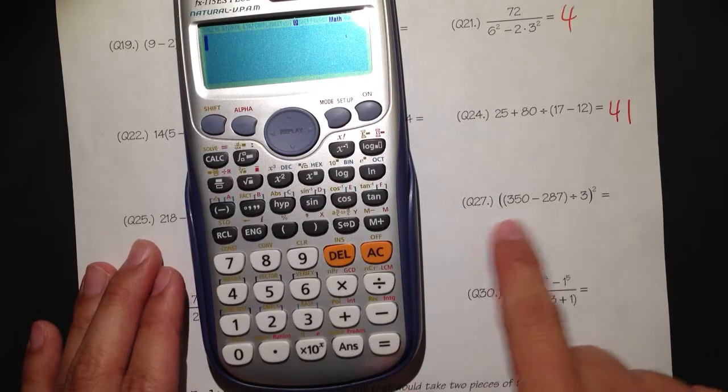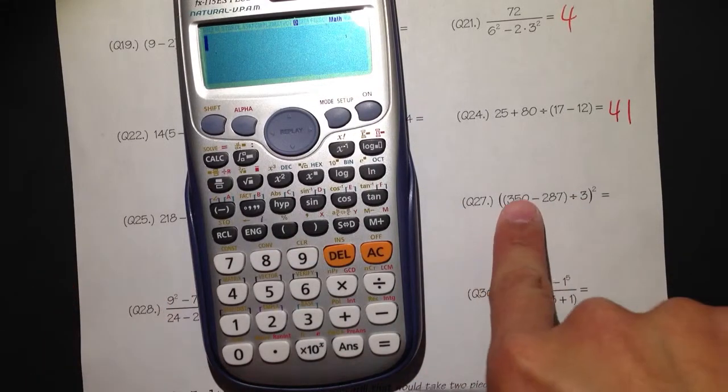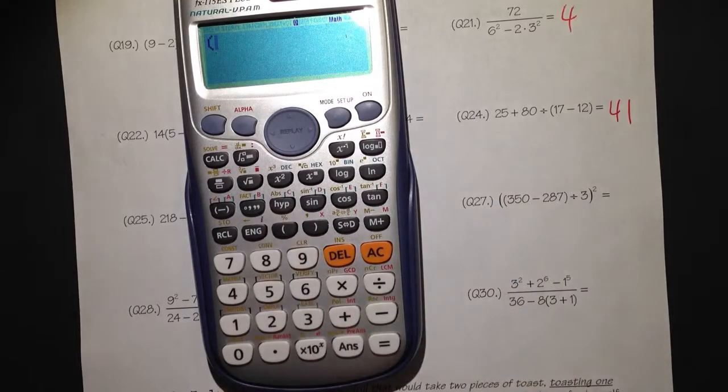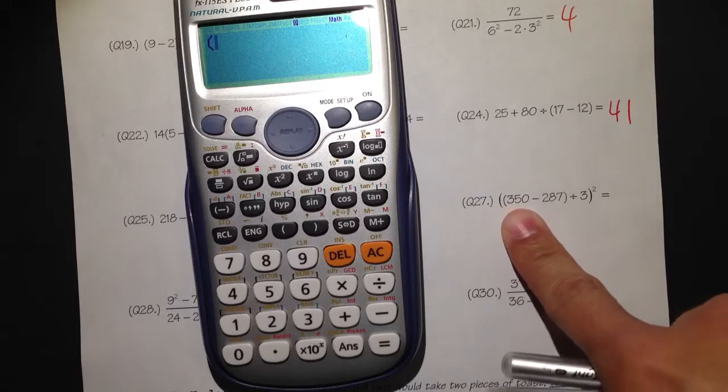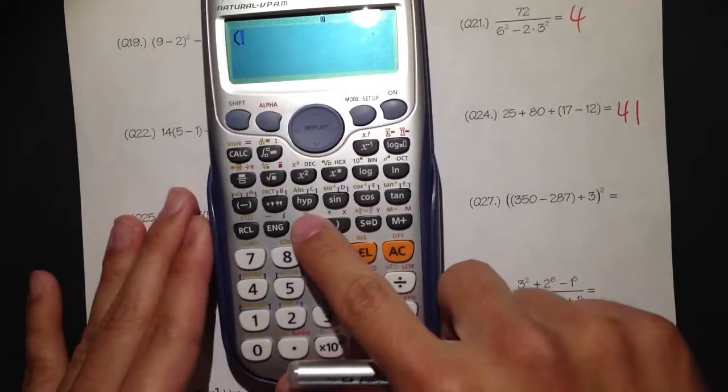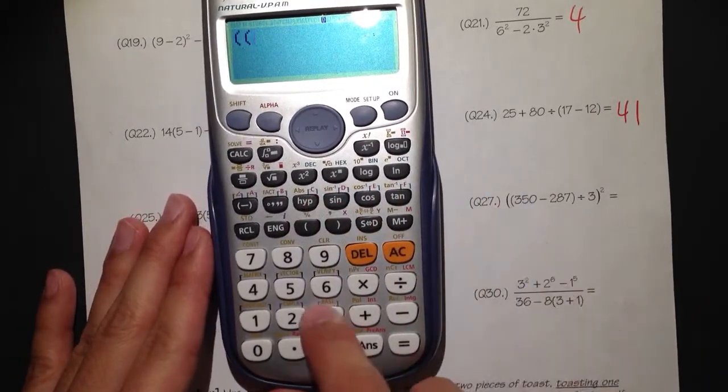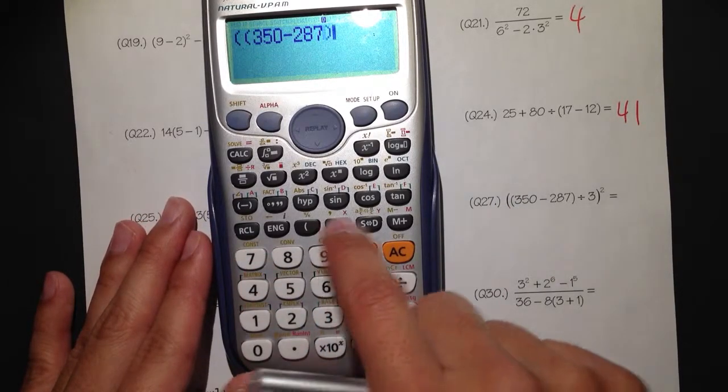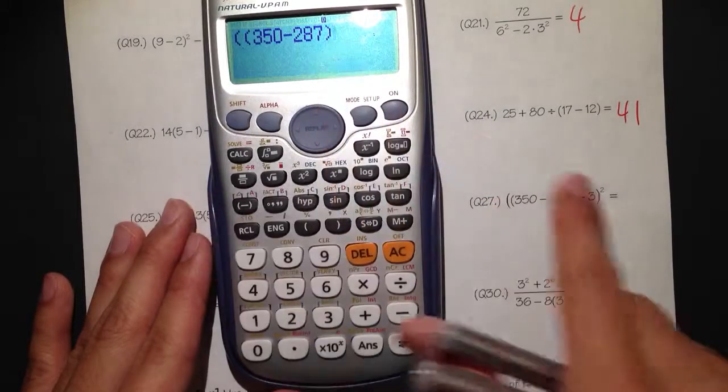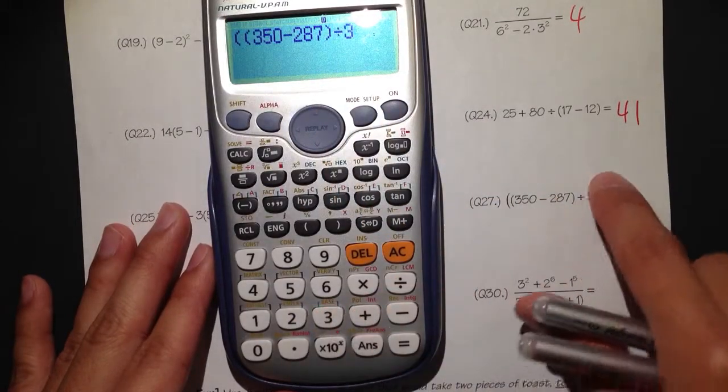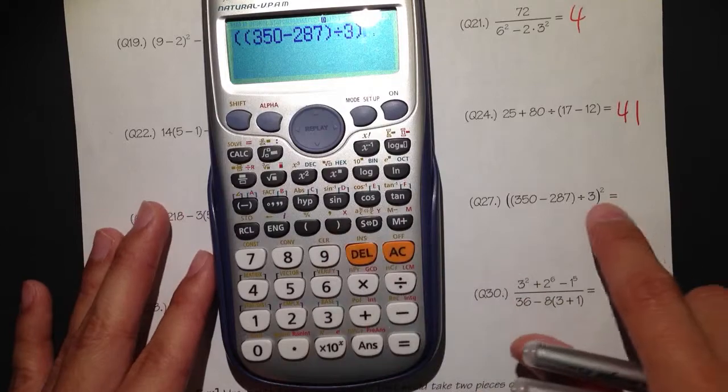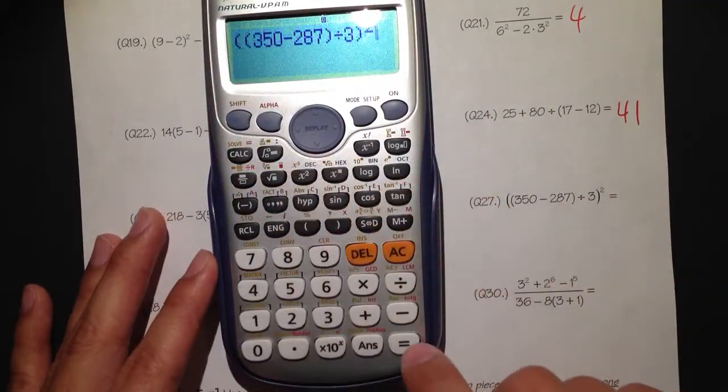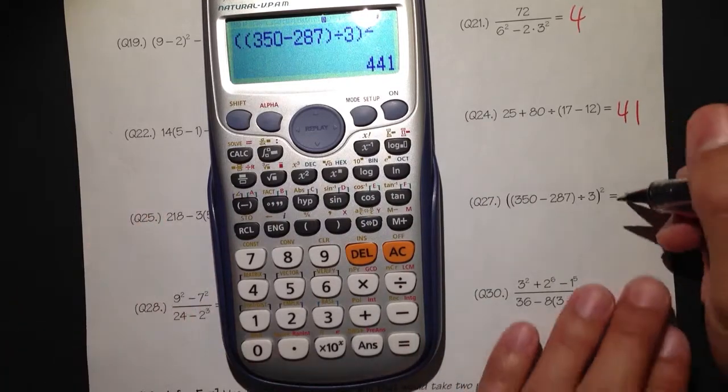Next one. I have two sets of parentheses, but you should just look at this from left to right. I have the parentheses first, so open the parentheses. But then again, I have another parentheses, so put another parentheses. So we have 350 minus 287, and then close that parentheses for the smaller one, and then divide by 3. Close parentheses. And then the whole thing to the second power. We can just use the shortcut to the second power. Equals to 441.